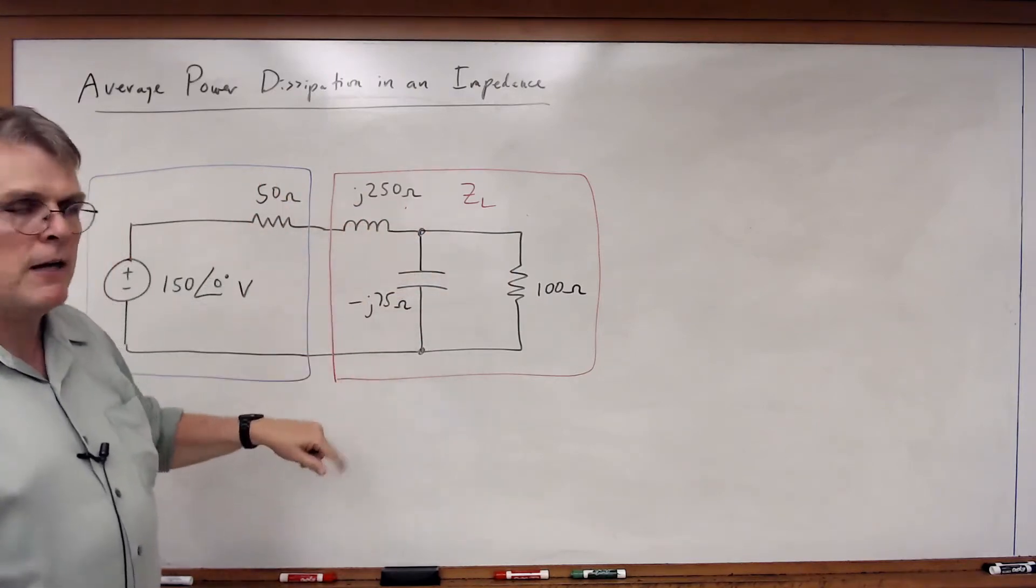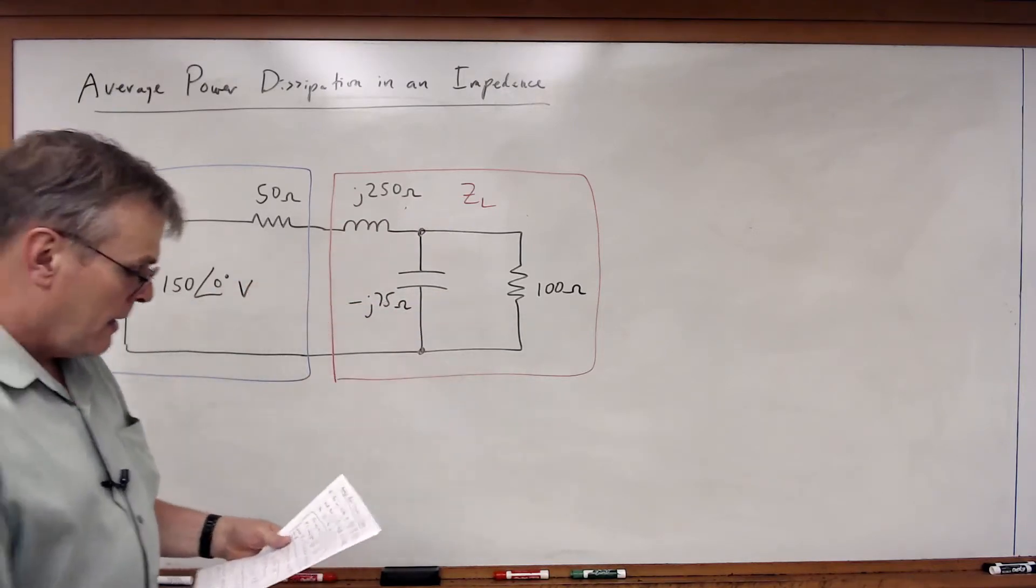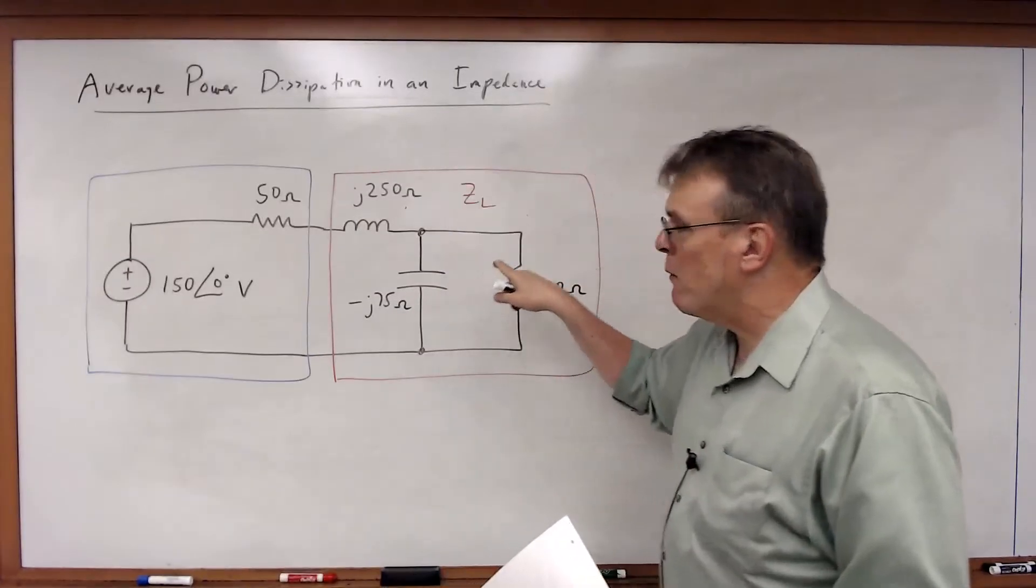Then I've got a load, and this time the load is not just a single element. The load is actually composed of three elements: an inductor, a capacitor, and a resistor. So the question is, what is the average power of this load?